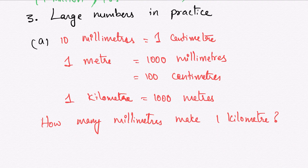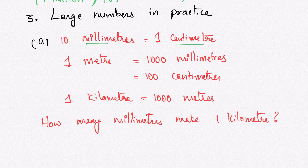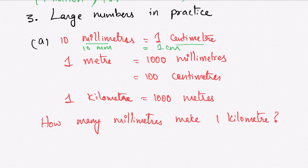Now let us look at large numbers used in practice. To measure length, we use millimeters, centimeters, and meters. 10 millimeters equals 1 centimeter. 1 meter equals 100 centimeters or 1000 millimeters. In earlier classes we have used meters and centimeters to measure lengths and distances.